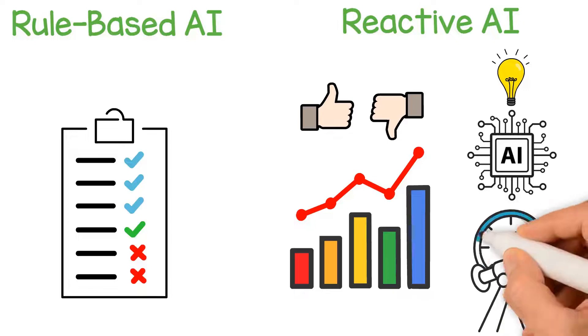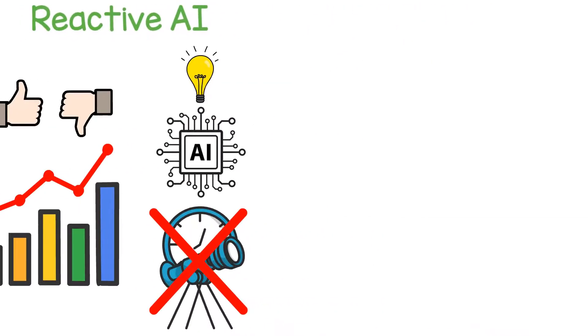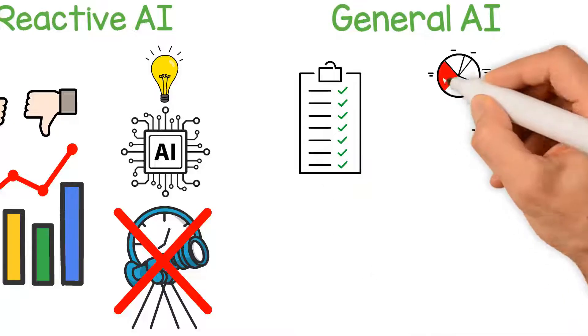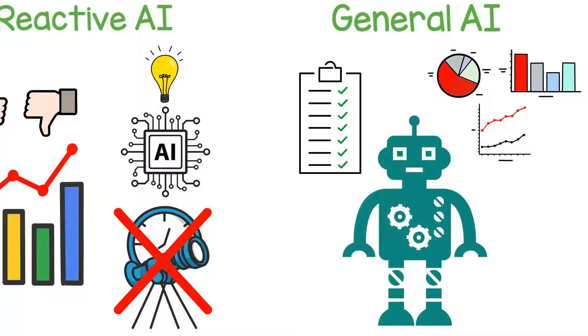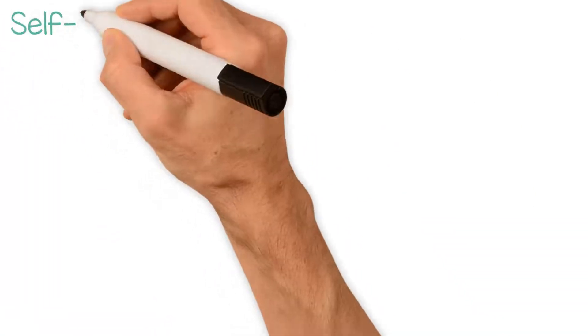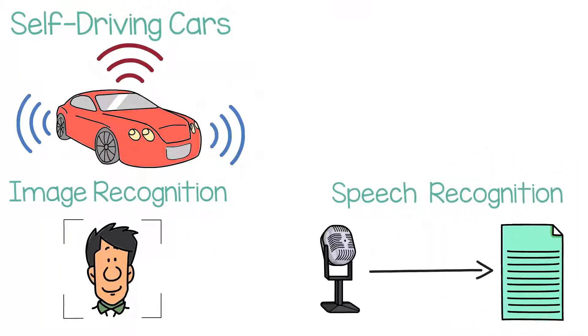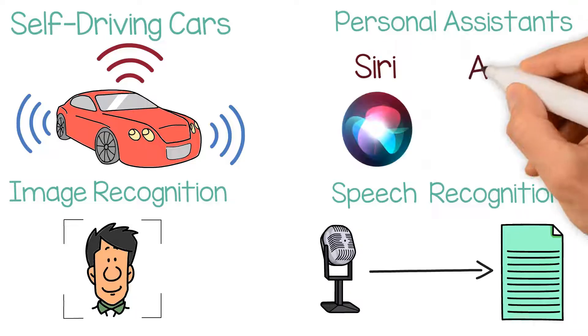Limited memory AI can remember past events but doesn't use them to plan for the future. General AI, on the other hand, can perform a wide range of tasks similar to a human. Some examples of AI applications include self-driving cars, image and speech recognition, and personal assistants like Siri and Alexa.